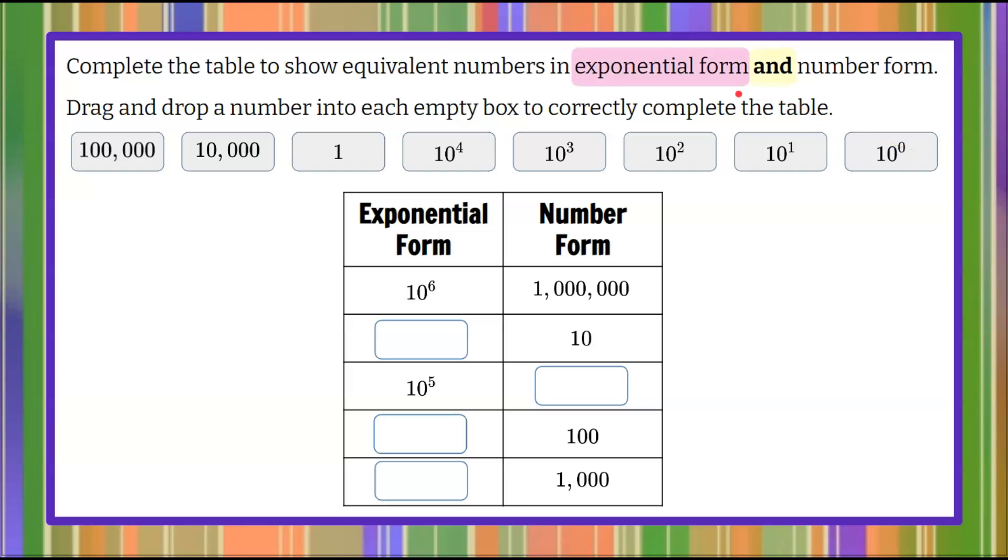Here we're discussing exponential form and number form. We can see in our answer choices that we have five answer choices that are in exponential form and three of the seven are in number form.